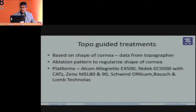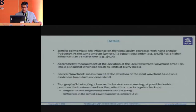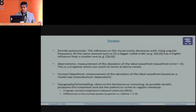Data is obtained from a Placido device, which gives more curvature data. Scheimpflug devices are used basically for screening. Higher-order aberrations are denoted by Zernike polynomials and taken into consideration while designing the treatment. The influence on visual acuity decreases with rising angular frequency, and a bigger radial order has a higher influence. The bigger radial order can be eliminated in some systems to save tissue, like in the Schwind ORK-CAM. Ideally, aberrometry measures the deviation from the ideal wavefront — with zero being ideal. Corneal wavefront specifically measures deviation from an ideal wavefront based on a model light, which is manufacturer dependent.